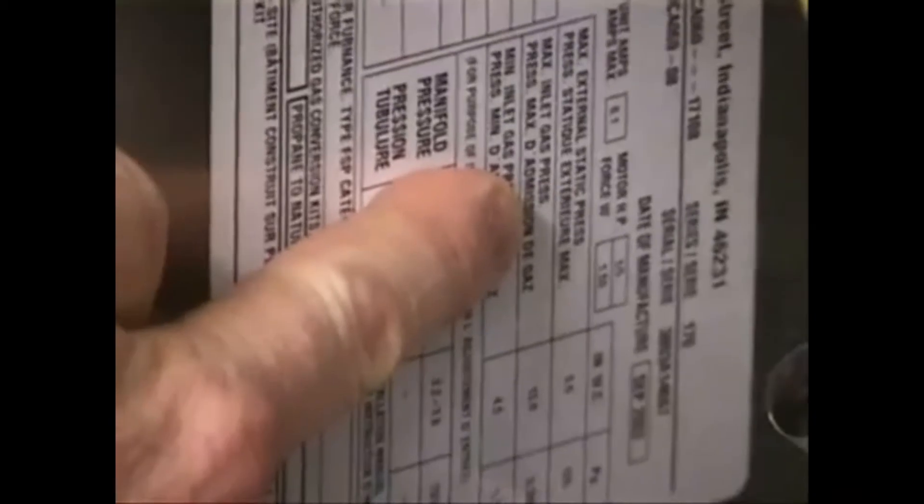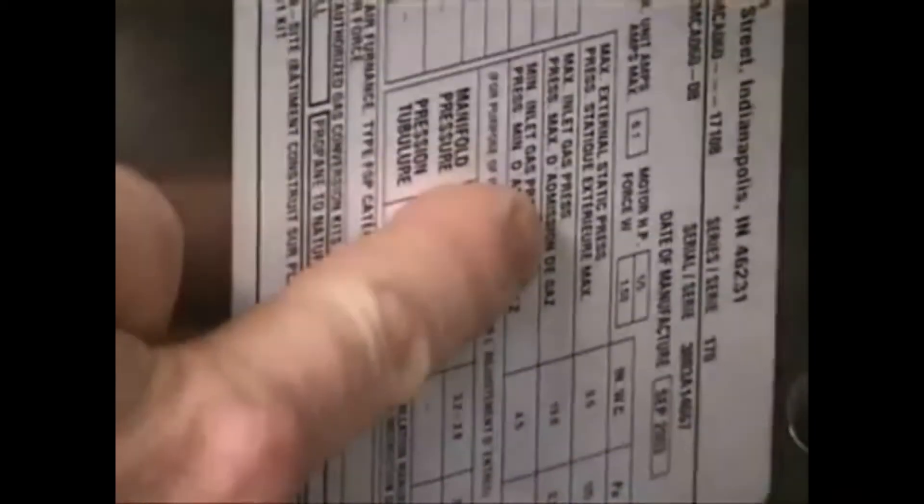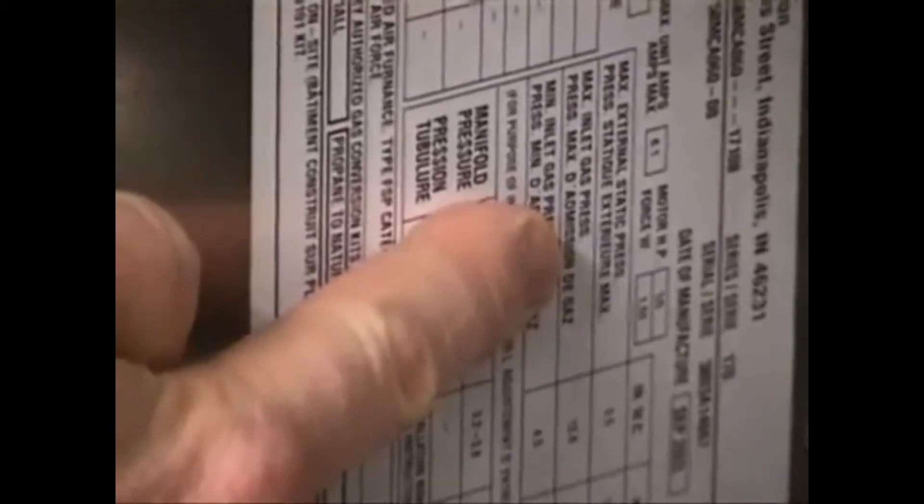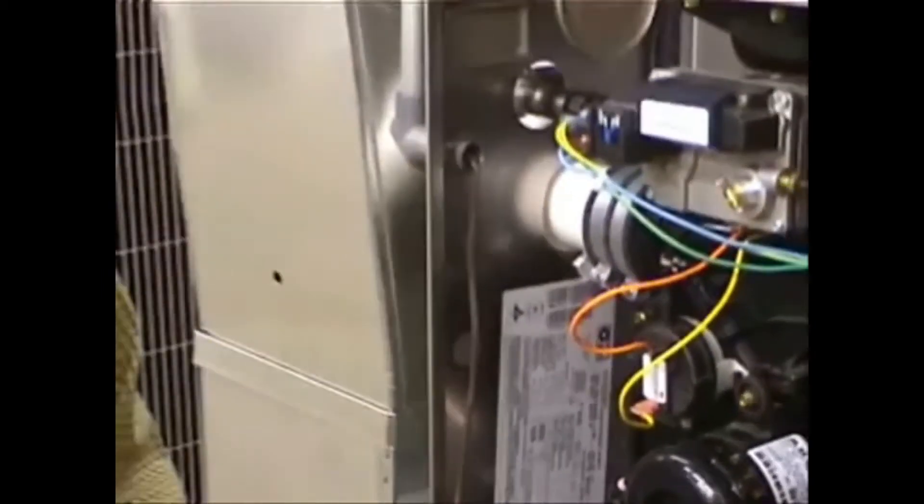If you stay underneath that, you'll get all the airflow delivery the equipment is rated for. If you go over that, the airflow becomes compromised. So you always want to stay under the maximum level. Typically residentially, we're dealing with 0.5 inches of water column as a maximum level, typically in the cooling mode.